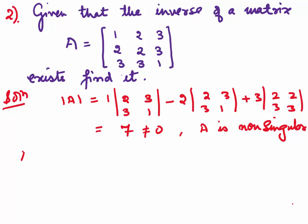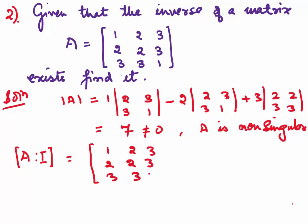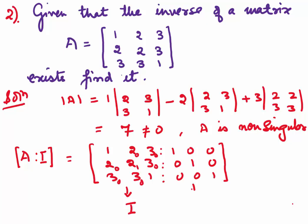To find the inverse, we start with the augmented matrix [A | I]. We write our matrix A = [1, 2, 3; 2, 2, 3; 3, 3, 1] along with the 3×3 identity matrix I. Then we will do elementary row transformations to reduce the left part to I, and whatever changes happen on the right give us A⁻¹.